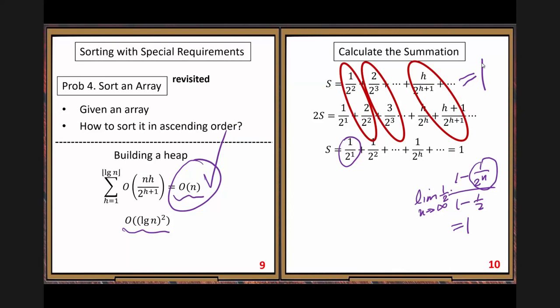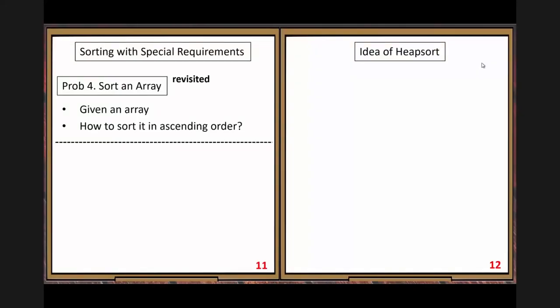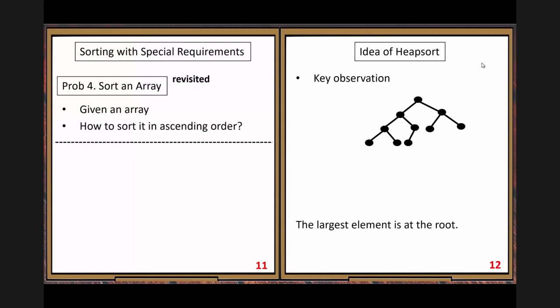So it's acceptable. Now, when we are given an arbitrary array, first we build a max heap using Big O of N cost — probably some constant multiple of N. Then we can do the heap sort, working on the max heap. Let's do the heap sort — very easy. Key observation: the idea of heap sort.